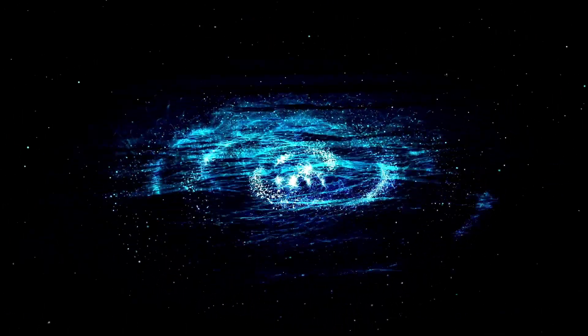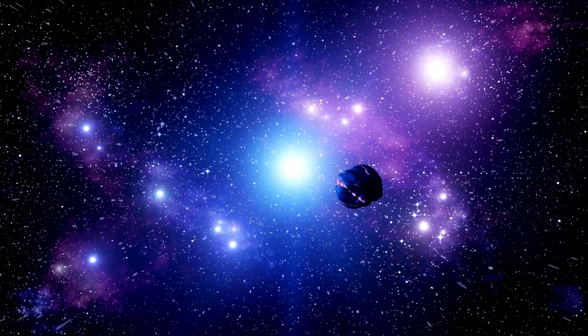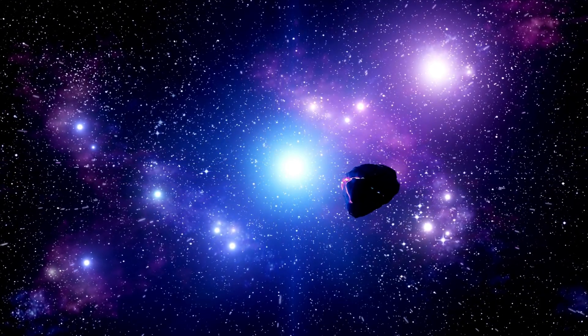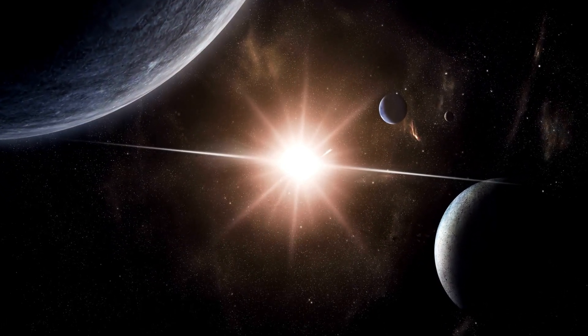Proxima b orbits very close to its star, experiencing significant solar winds that could strip its atmosphere. Despite this, it may receive enough sunlight for liquid water and temperatures similar to Earth's.